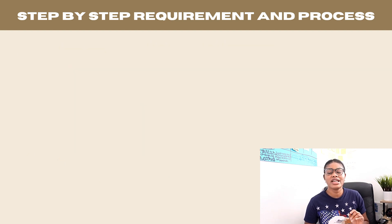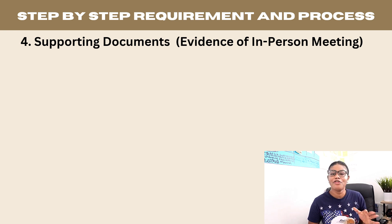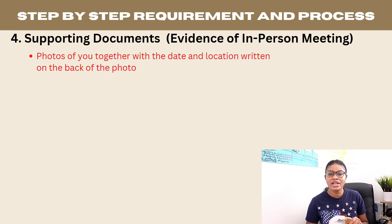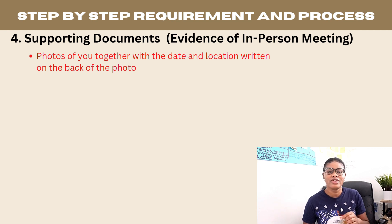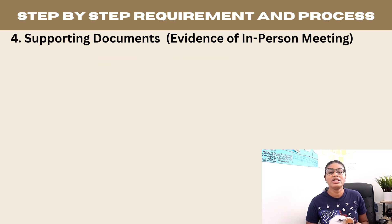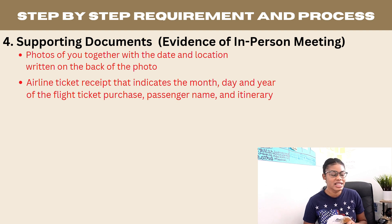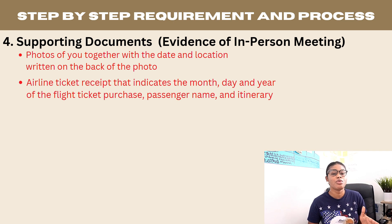Step four is supporting documents — evidence of in-person meeting. First, provide photos of you together with your fiancé. Ideally, write a short description on the back of each photo with the date and location. Second, include airplane tickets or boarding passes showing that you met, including the date, year, passenger's name, and all relevant flight information.